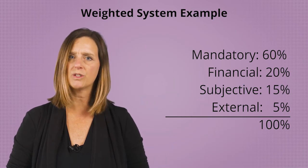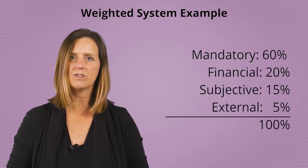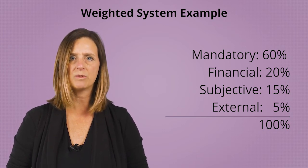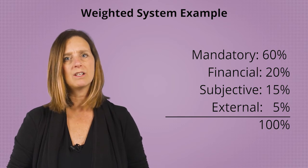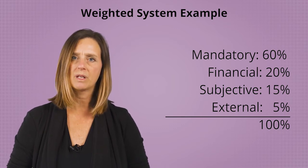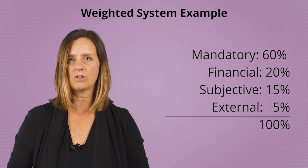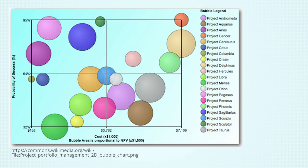Once there is agreement on the criteria, each project is graded on each criteria, and the project with the highest grade is selected. Frequently, the criteria are weighted based on the priorities of the organization or portfolio. For example, you could have a weighted system such as mandatory gets 60%, financial 20%, subjective is worth 15%, and external is worth 5%. Once the projects are graded against the criteria, tools such as the bubble chart shown are used to analyze and compare the different projects in order to assist in decision making.